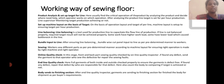Online quality checker: at this stage, front and back parts' sewing quality is checked by online quality inspection. If any defects are found, the garment is sent to the operator who caused the defects to repair the sewing fault. Endline quality checker: the full garment, both inside and outside, is checked properly. After inline quality inspection, the garment is sent to the finish section for the body to be prepared for shipment as per buyer requirements.